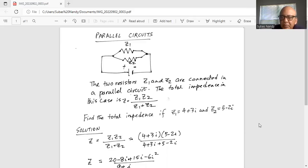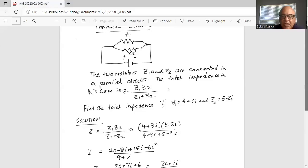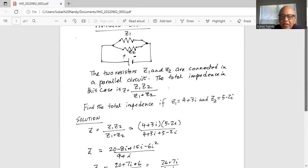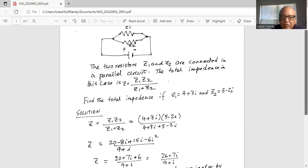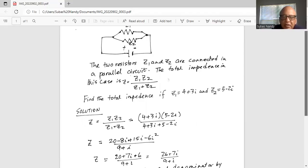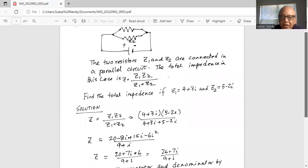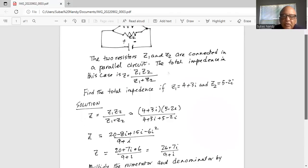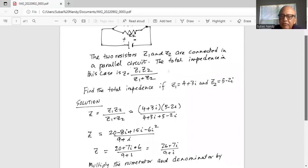So the total impedance Z is given by Z1 multiplied by Z2 divided by Z1 plus Z2. So it is 4 plus 3i times 5 minus 2i divided by 4 plus 3i plus 5 minus 2i. So we will first FOIL out the two factors in the numerator.